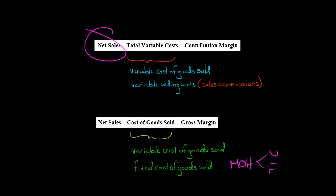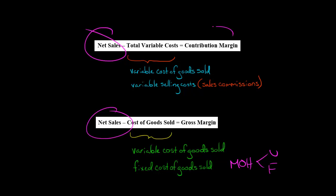The fixed component of manufacturing overhead is ultimately going to be expensed through Apple's cost of goods sold. So when you look at Apple's gross margin and subtract that cost of sales, there are some fixed costs being deducted from net sales to get gross margin. Whereas when we calculate their contribution margin — which I'm going to do using some assumptions, since they don't actually present it on their income statement — there are no fixed costs being subtracted.